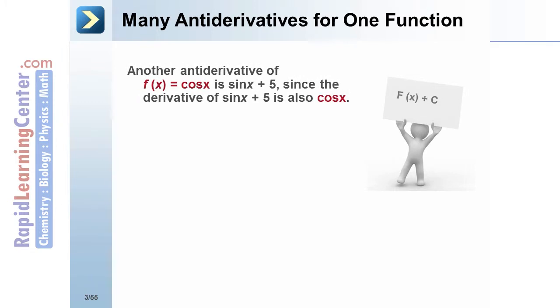Another antiderivative of f(x) = cos x is sin x + 5, since the derivative of sin x + 5 is also cos x.